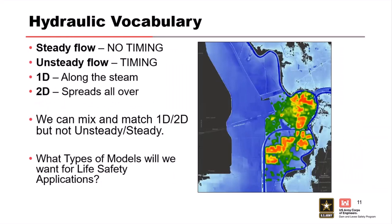That's the hydraulic primer. We've got steady flow and unsteady flow — the big difference is timing. Between 1D and 2D: 1D is along the channel, 2D lets it move wherever it wants. So just a little question here: can you mash these words together to say what types of models will we want for LifeSim? Are you going to want a steady or an unsteady model?